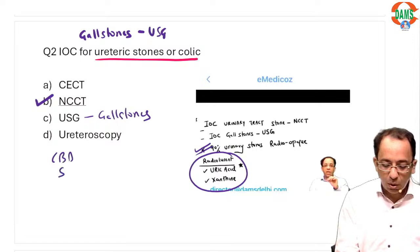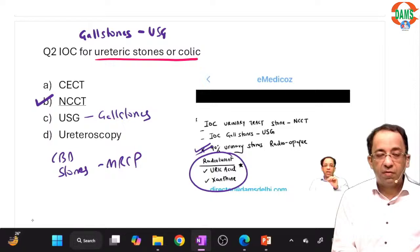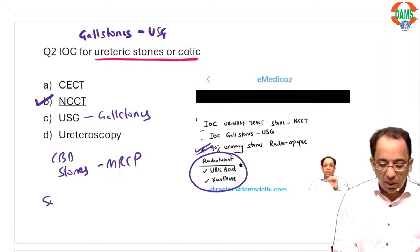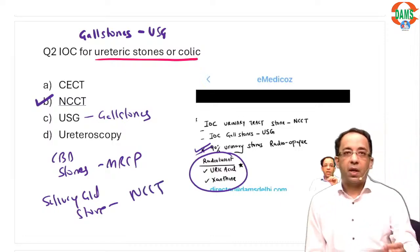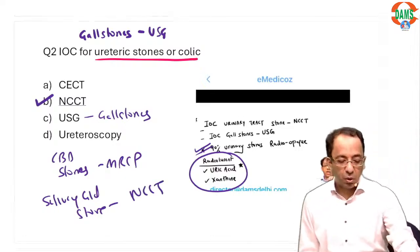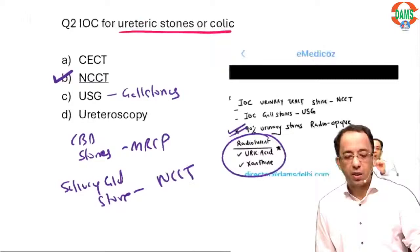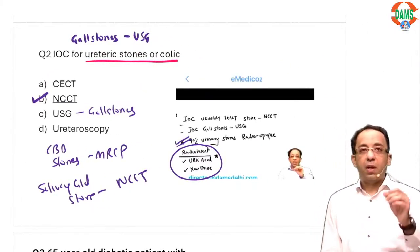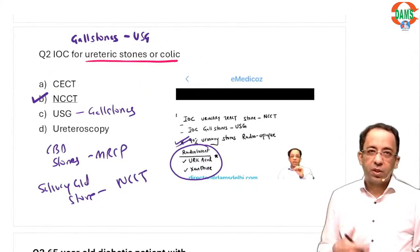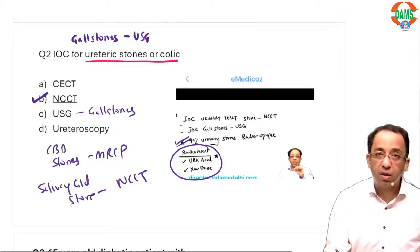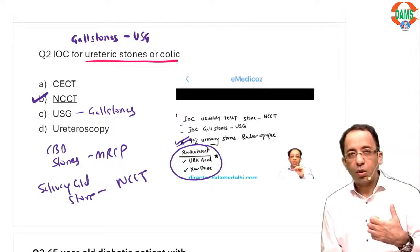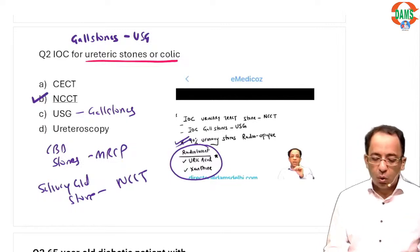To summarize: if they say gallstone, it will be ultrasound; if they say CBD stone, it will be MRCP; if they say salivary gland stone, it will be NCCT. These are the usual questions that can be asked from this topic in future exams as well.